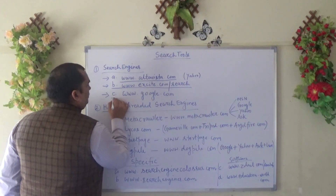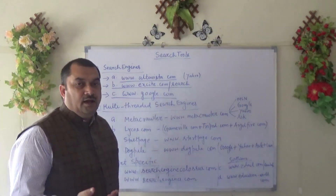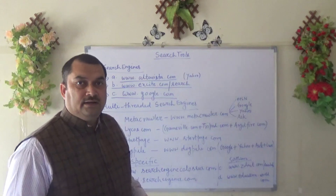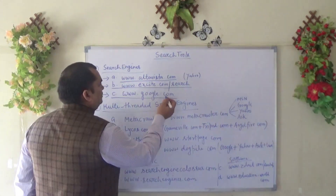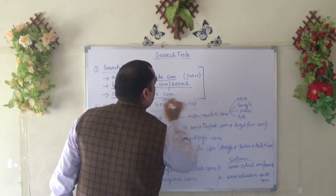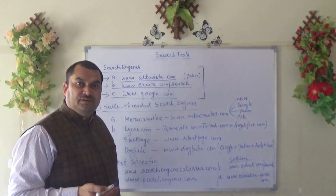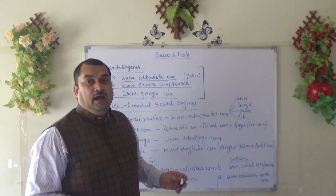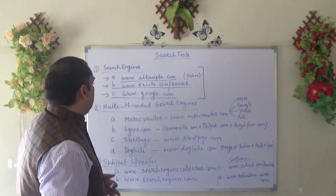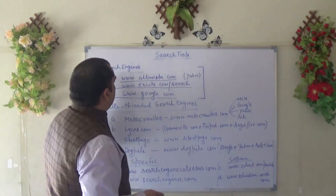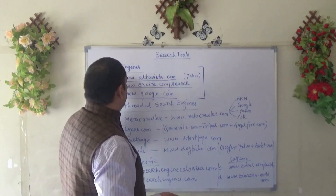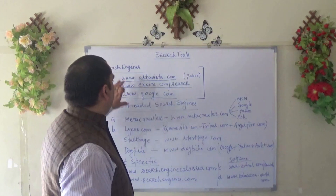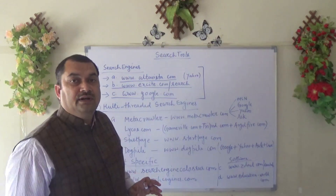Obviously everybody is aware about google.com, which is very famous. Nowadays we are so habitual that whenever we need any information and don't find it in offline content, we immediately go to google.com. These are three major search engines which can be used to get information from the internet. Note that these search engines work independently — AltaVista, Excite, and Google all have their own individual platforms which return information based on their own indexed databases.